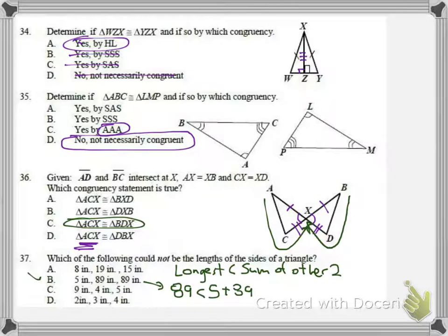Number A, I have 19 is less than 8 plus 15. 19 is less than 23, so that one's okay. Let's get rid of the others here. If I look at answer D, 4 is less than 2 plus 3, 4 is less than 5. So that one's good.